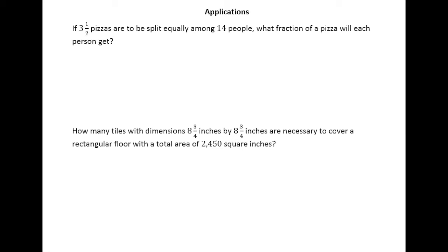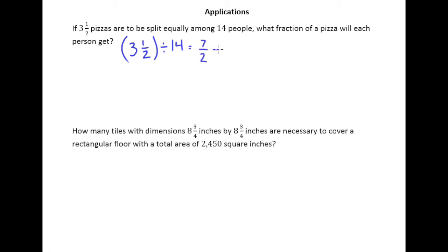If we're splitting it equally among 14 people, it makes sense that we're going to take the 3½ pizzas that we have and divide that into 14 equal chunks. First, let's turn these to improper fractions. In the case of 3½, we get 7 halves, and 14 becomes 14 over 1.